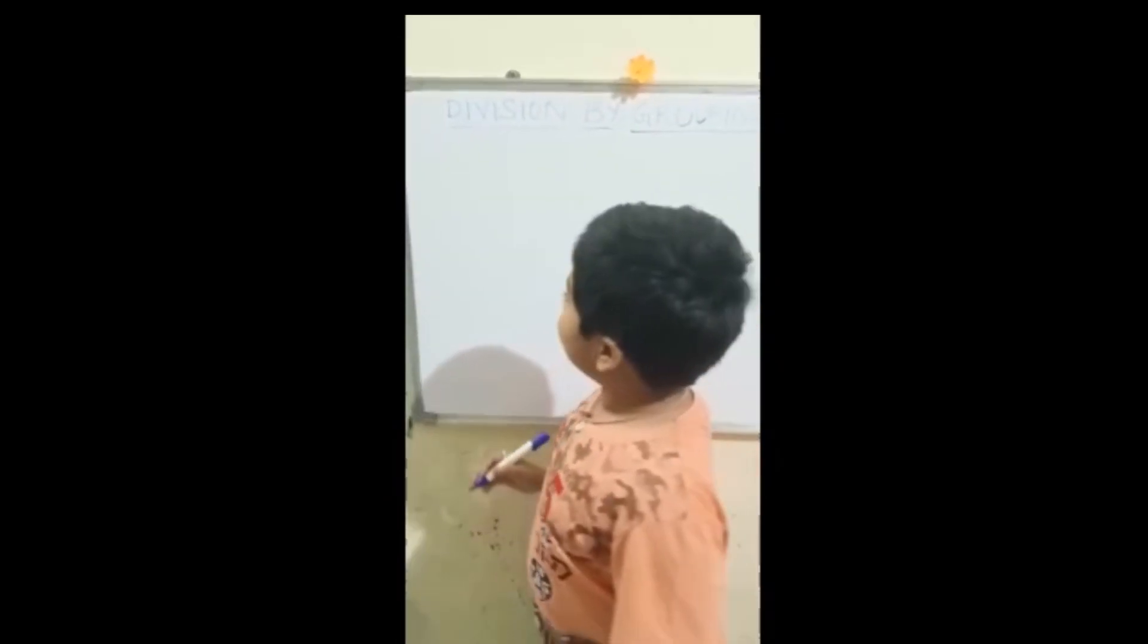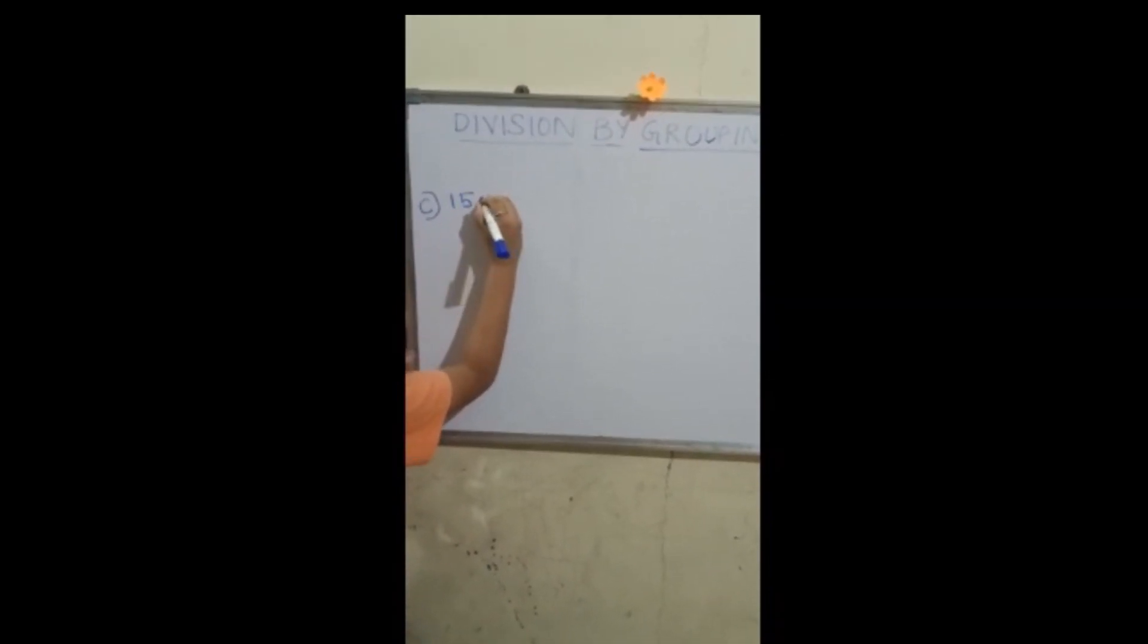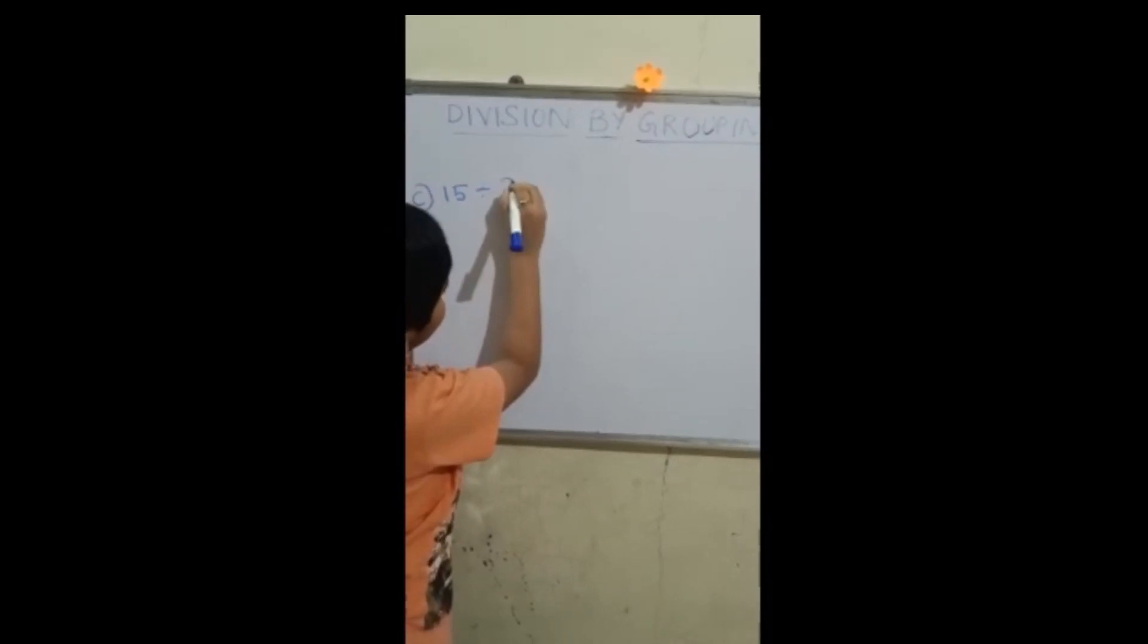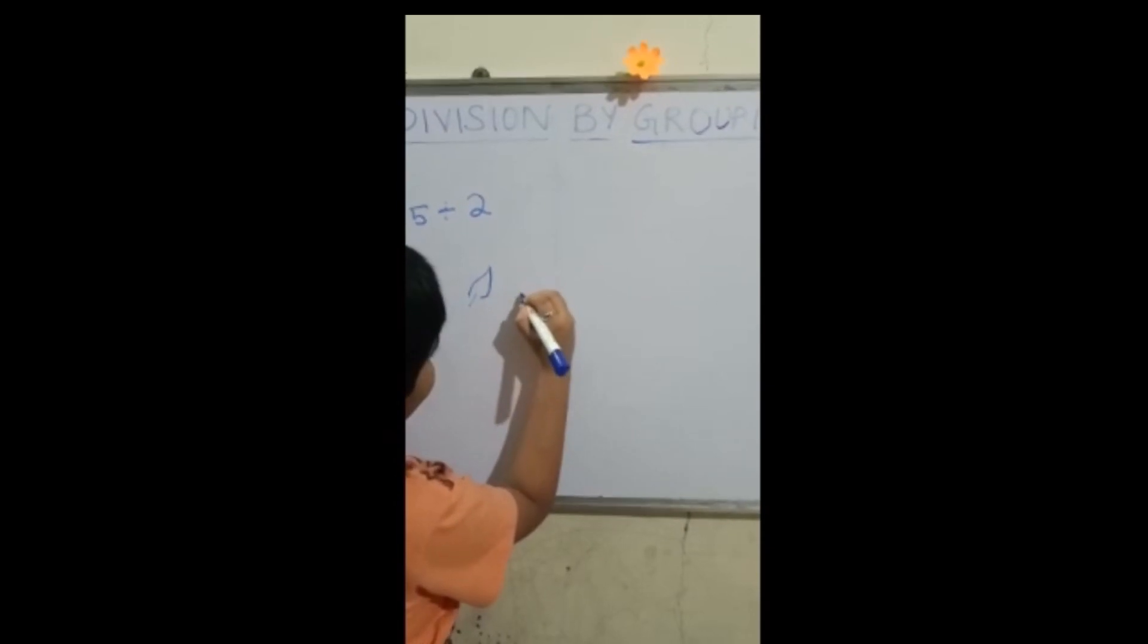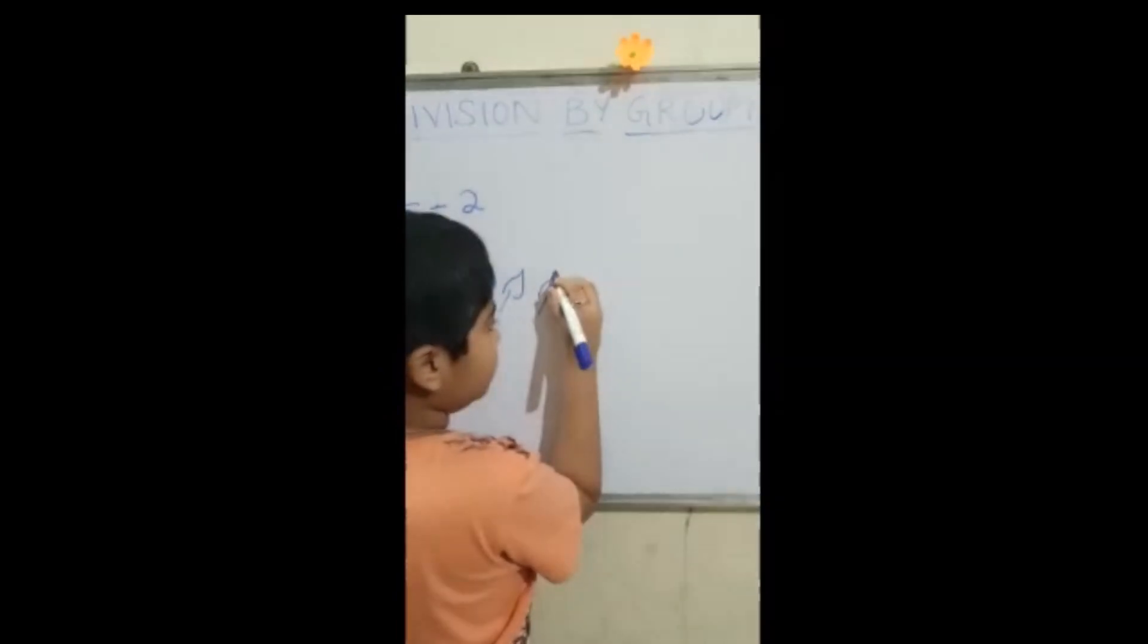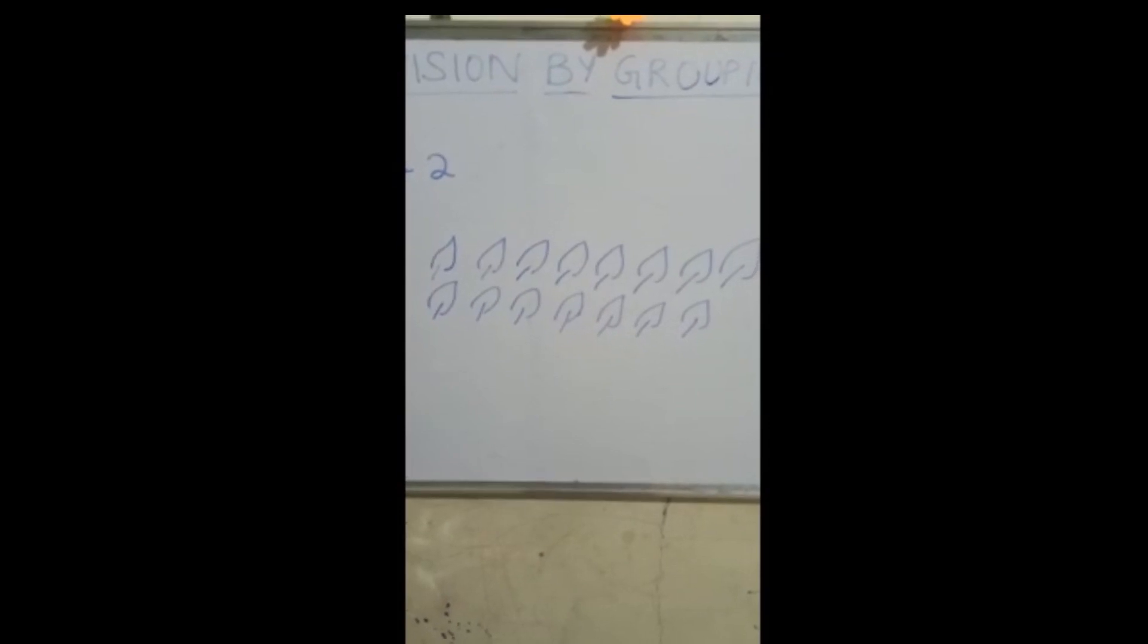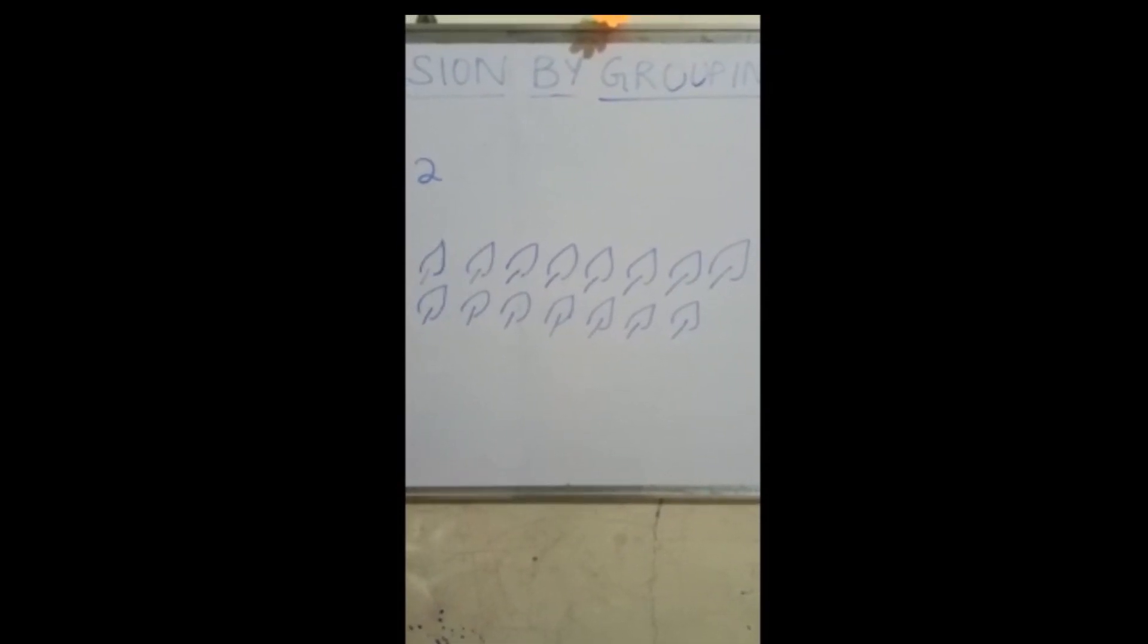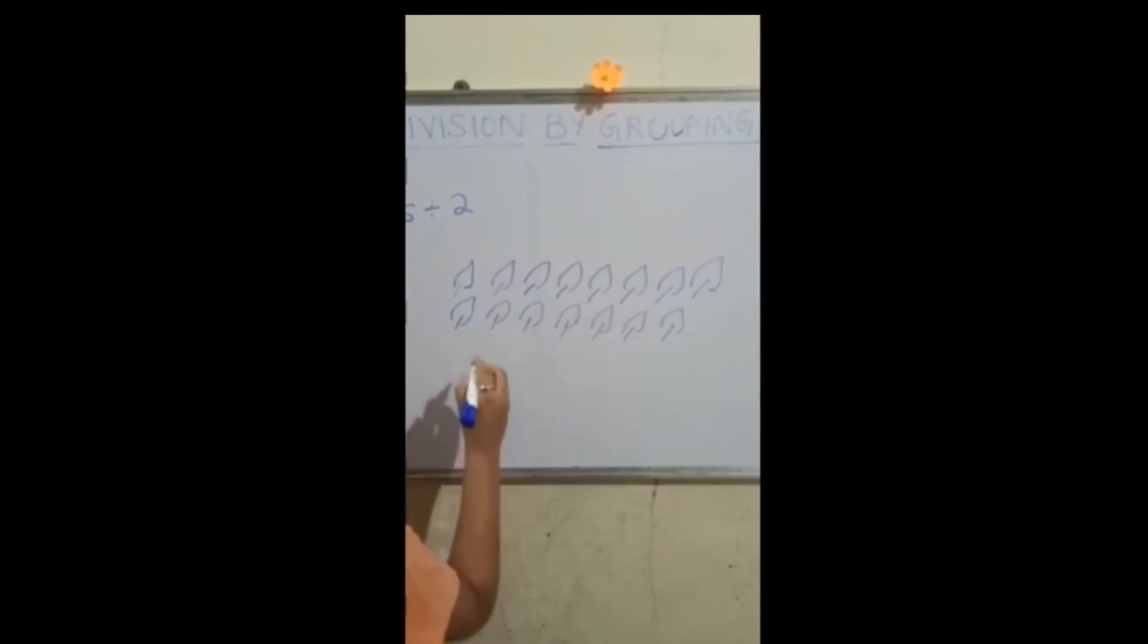Now let us see another example. Fifteen divided by two. Now let us draw fifteen leaves. Now let us group by two.